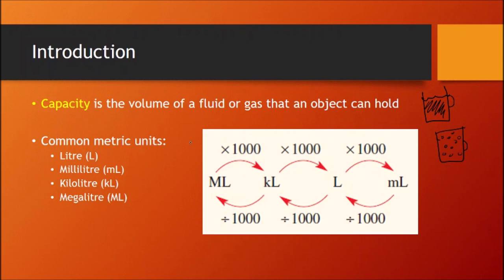Alright. So common metric units are litre with a capital L. That's the symbol that you would use to denote them. So I've just put all the symbols in brackets. Milliliters, little m with capital L. Kiloliters, little k with capital L. Megaliters, capital M and L.